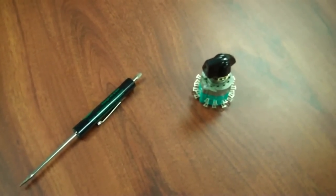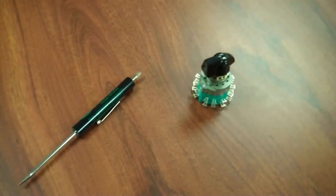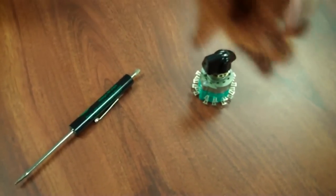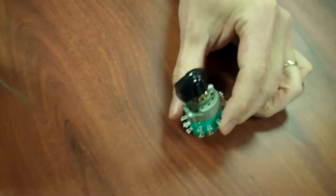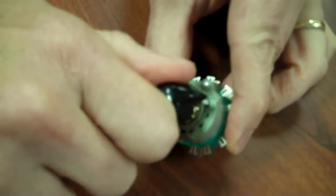This short video is to show you how to set the adjustable stop on our C4 series rotary switch. When you receive the C4 rotary switch, it's normally set in the number two position. One, two.